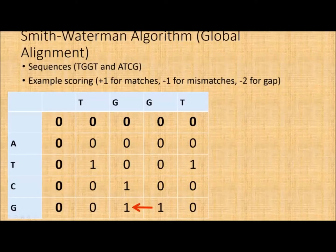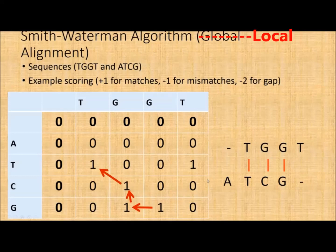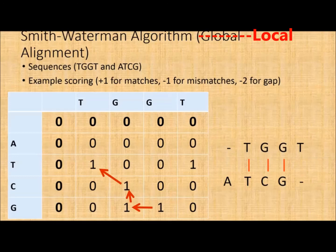Using the same TGGT and ATCG sequences with plus one for a match, negative one for a mismatch, and negative two for a gap, the recurrence relationship with the zero floor means negativity goes away and positive terms appear where matches exist. Tracing back, G aligns with G, C aligns with this G as a mismatch, and T aligns with T — the same result as Needleman-Wunsch in this case. But they are not the same: Needleman-Wunsch is good for global alignment, and Smith-Waterman is good for local alignment.